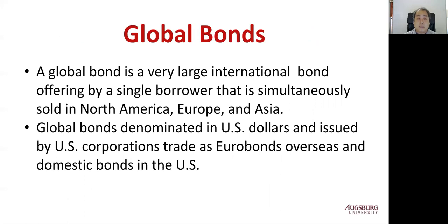There is also a category called global bonds. A global bond is a very large international bond offering by a single borrower issued in many markets globally. The first global bond issues were offered in 1989. Large multinational corporations can raise dollars not just in the US but also in other markets — a global bond denominated in US dollars issued by a US corporation can trade as a eurobond overseas and as a domestic bond in the United States, across multiple markets worldwide.